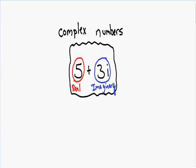So this number 5 plus 3i is what a typical complex number looks like. In this video I'm going to talk about adding complex numbers, subtracting complex numbers, and how to graph complex numbers. So let's get started right away with an example.